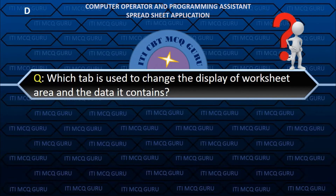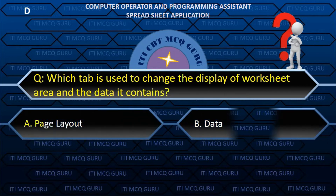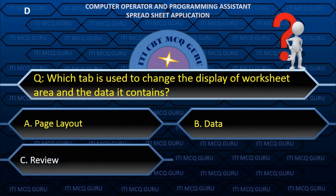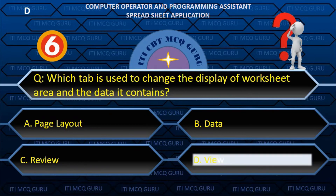Which tab is used to change the display of the worksheet area and the data it contains? B. View.